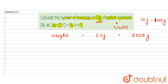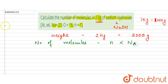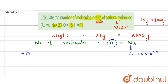Now, the number of molecules is equal to the number of moles multiplied by Avogadro's number, which is 6.022 × 10²³. The number of moles is calculated as weight divided by molecular weight.